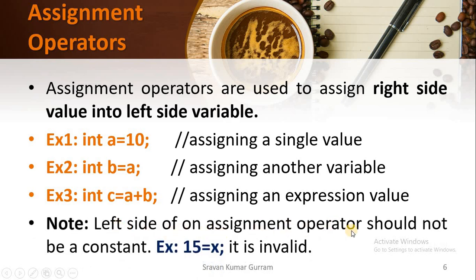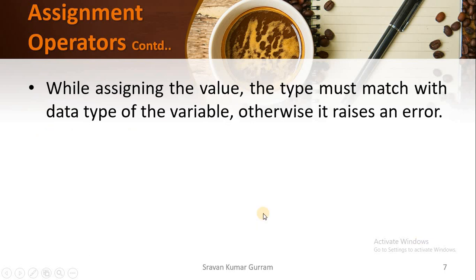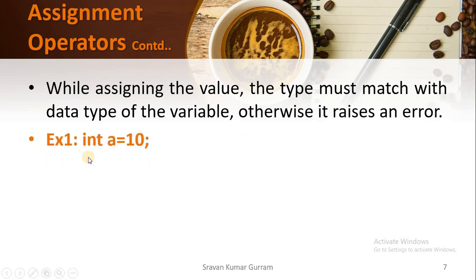The left side of an assignment operator should not be a constant. See this example: if you write 15 = x, it is invalid — it does not give any meaning. Always the assignment operator is used to store the right-side value into the left-side variable. When using the assignment operator, the value being assigned must match the variable's data type, otherwise it raises an error.